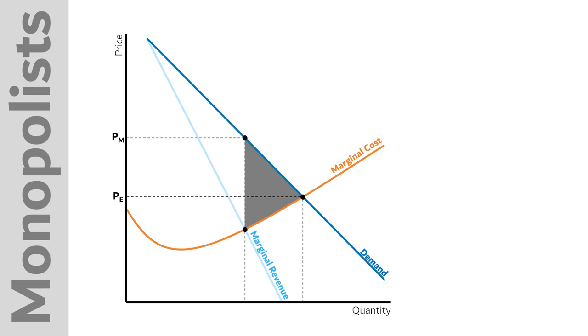To recap, the efficient price would be found where marginal cost crosses with demand. In a competitive market, this is the point reached, and the point where all mutually beneficial trades are exhausted.